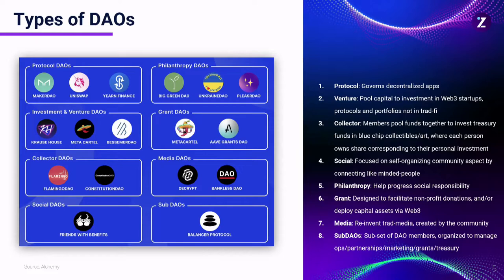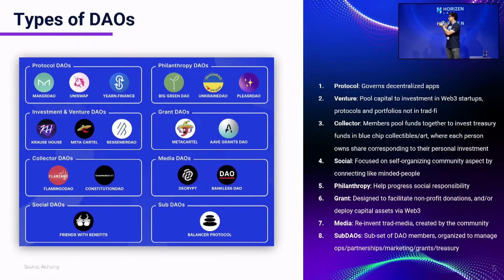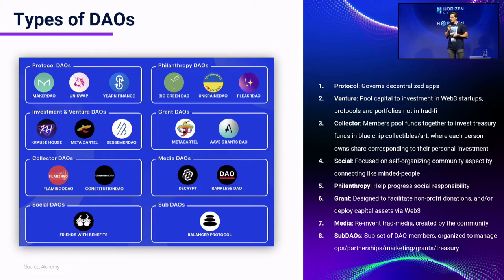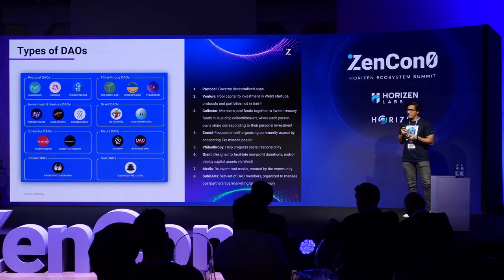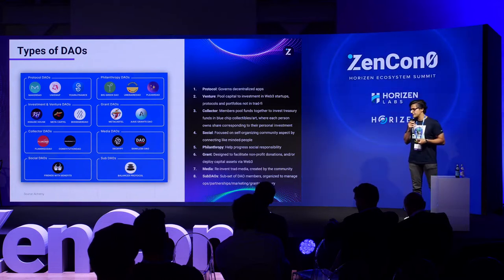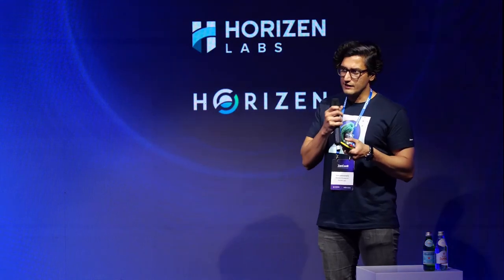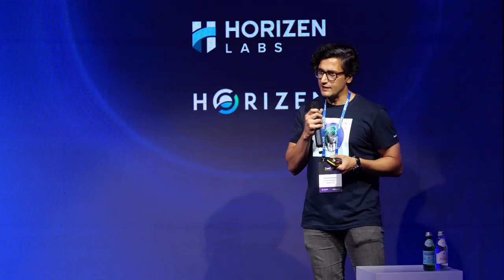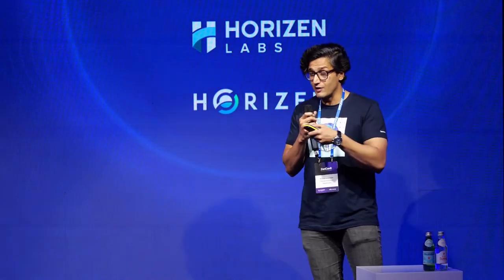This list goes on and on. The social DAO is focused on the self-organizing community aspect by connecting like-minded people. I don't know if you guys have heard of Friends with Benefits, which is backed by one of the largest venture capital firms, A16Z — with just 75 FWB tokens you can get access to all the creators and participants in there. And then Media DAO, which is a unique way of disrupting how social media and large centralized organizations have been operating. I'm a big consumer of Decrypt, a news platform that allows its content creators to vote on what articles should be published. All in all, these types of DAOs will continue to grow and we'll have new categories created pretty much on a daily basis.